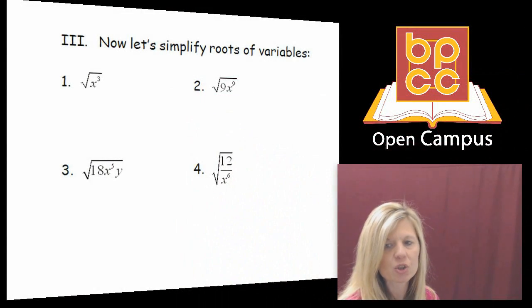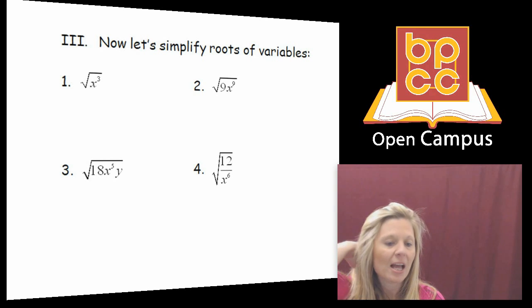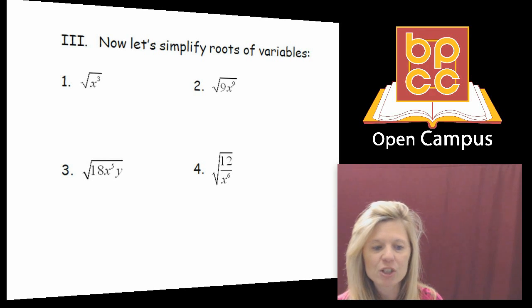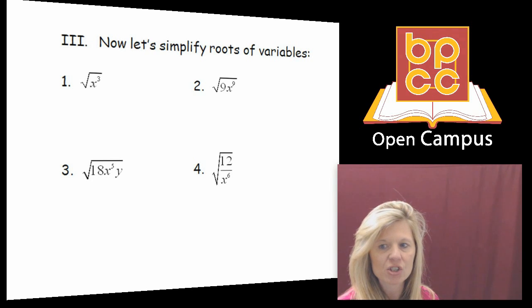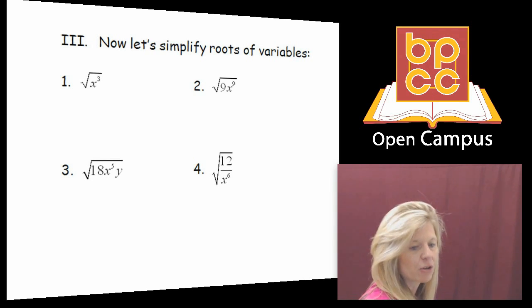We are learning how to simplify radical expressions. Last time we did it with numbers, and now we're going to do it with variables. Not every root is going to break down nicely. If you have perfect squares or perfect cubes, you can square root or cube root them nicely, but that's not always the case. Today we're discussing square roots and cube roots of both numbers and variables.